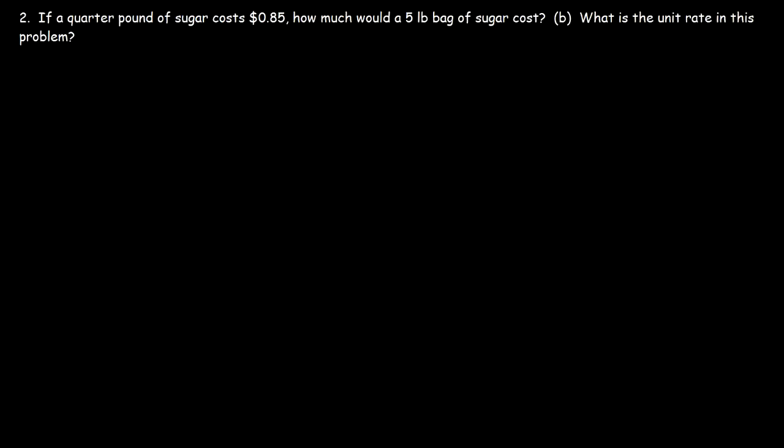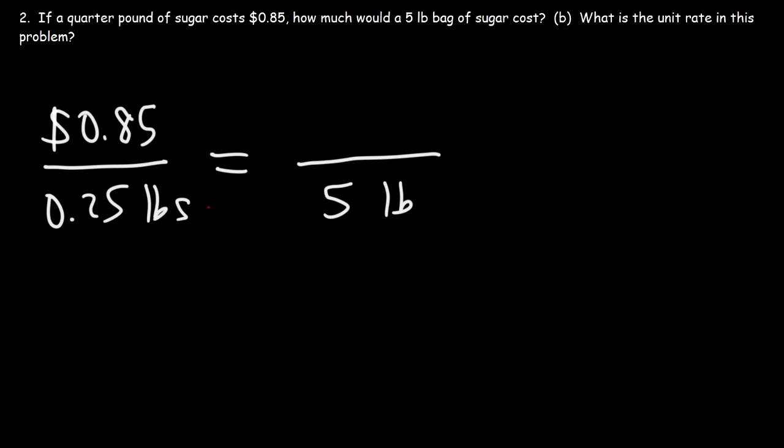Number two: if a quarter pound of sugar costs 85 cents, how much would a five pound bag of sugar cost? For this problem, we can also set up a proportion. Let's write two fractions separated by an equal sign. In the first part of the problem, the sugar costs 85 cents given a quarter pound of sugar. So a quarter is basically 0.25, and we'll write the unit pounds. Now, how much would a five pound bag of sugar cost? So we could put five pounds here. Because we have pounds on the bottom left, we need to put pounds on the bottom right as well.